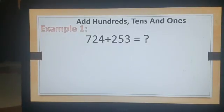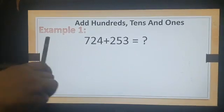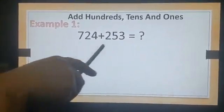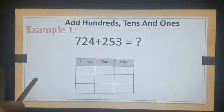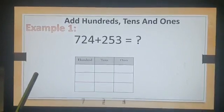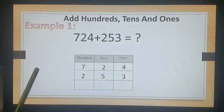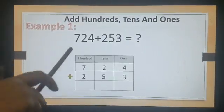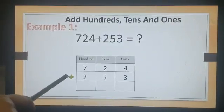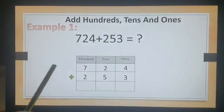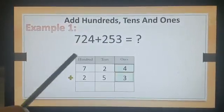Let's take another example for your more understanding. Look at here. I want to put these numbers in place value chart. 724 plus 253. What do you think? Yes, you have to follow the steps. Step 1: Add the ones.